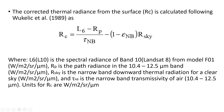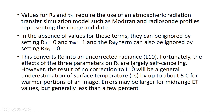Since we use Landsat 8, we use spectral radiance for band 10. The effects of the three simplified parameters on the corrected radiance are largely self-cancelling. However, not correcting band 10 spectral radiance will result in a general underestimation of surface temperature by about 5 degrees Celsius for warmer portions of the image. Errors may be larger for mid-range evapotranspiration values, but are generally less than a few percent.